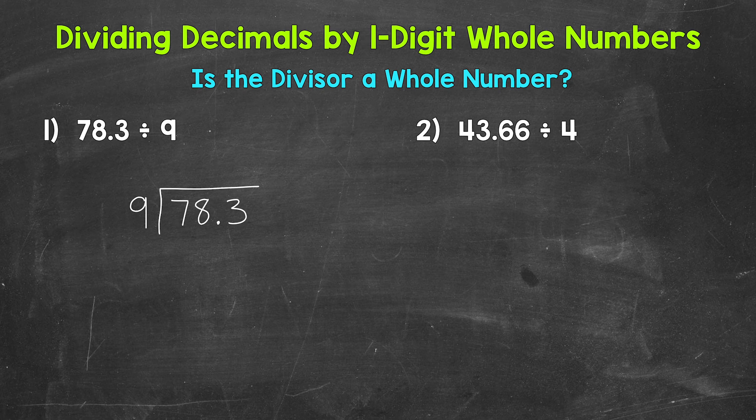Well, 9 is a whole number. That means we bring our decimal straight up into our answer. So it's going to place the decimal in our answer. So again, always check. Is the divisor a whole number? If yes, bring the decimal straight up.